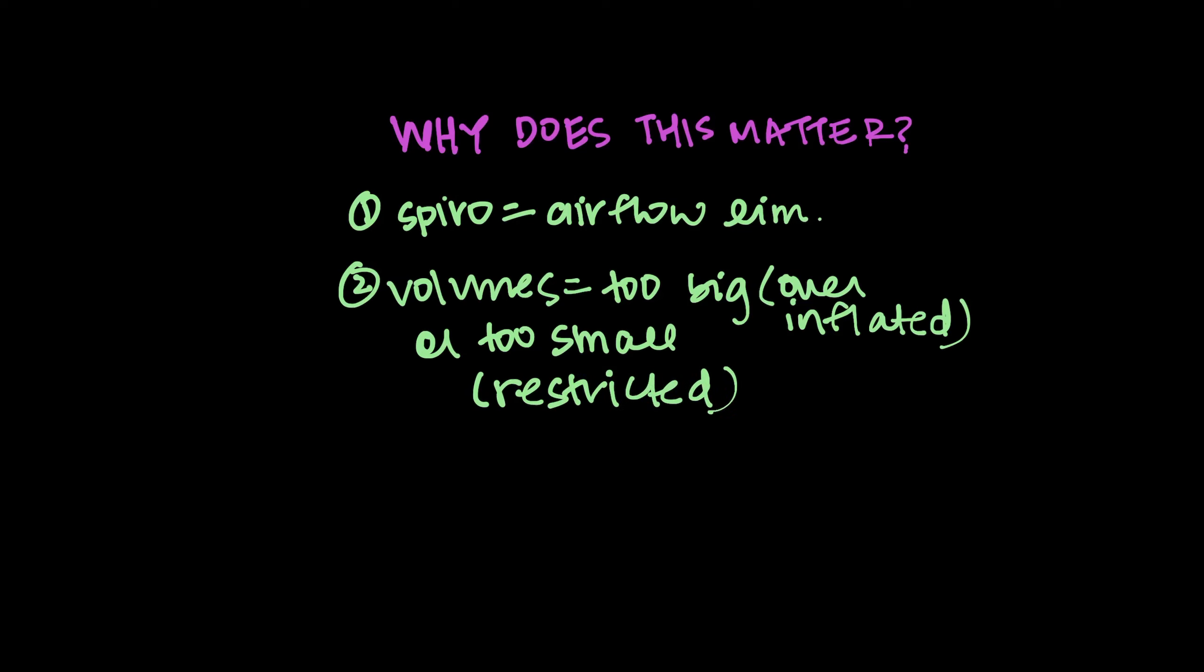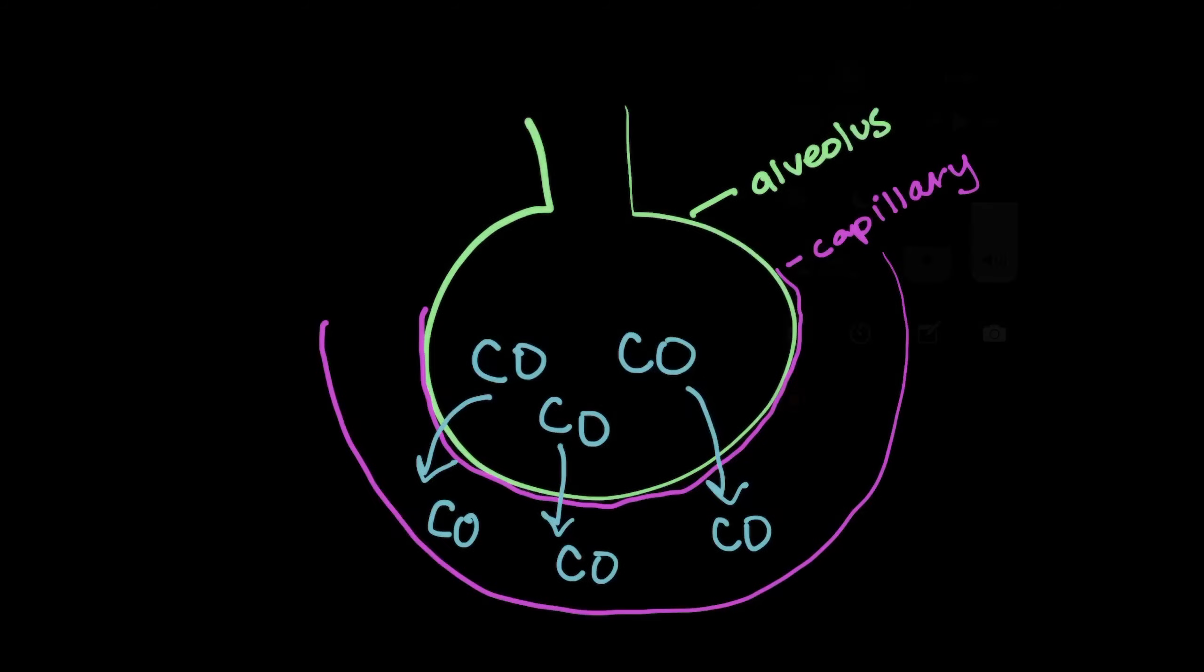So what does the D-L-C-O help with? The D-L-C-O can help us distinguish between a few different disease states that we may have identified in those categories already mentioned. Back to this diagram of the alveolar-capillary interface. Because that's really what we're testing here, right?